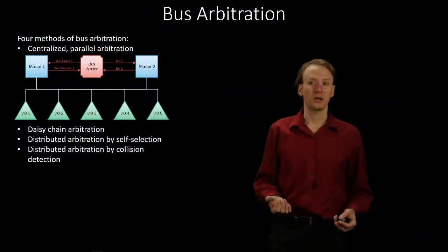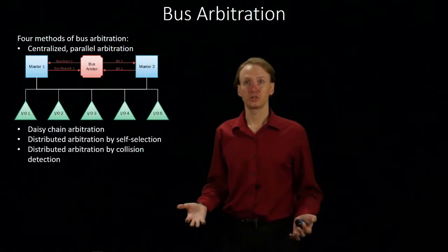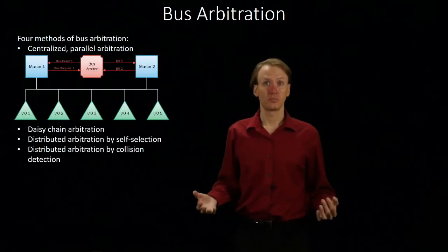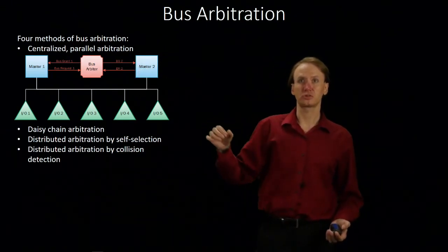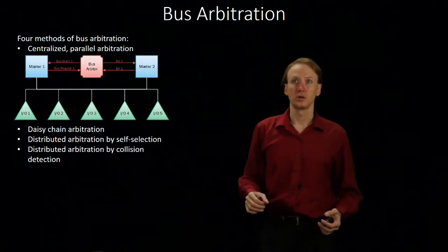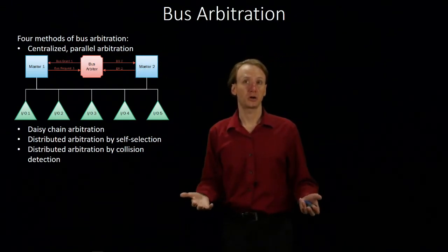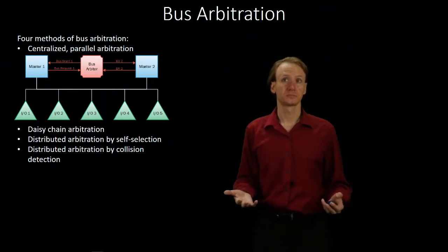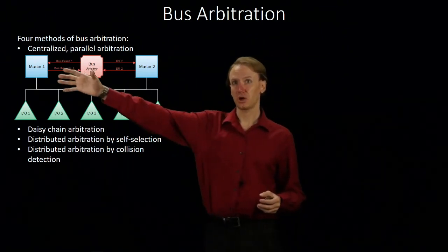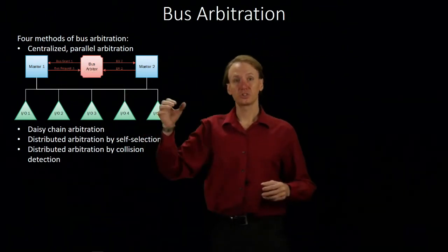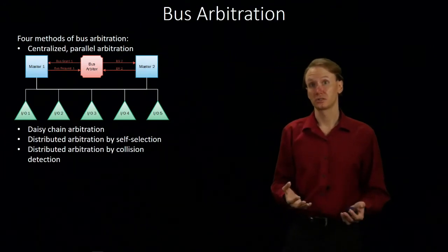We're going to be looking at four different types of bus arbitration, and we'll mostly focus on the first type, which is a centralized parallel architecture. In this case, we have a centralized bus arbiter which determines who gets to use the bus.